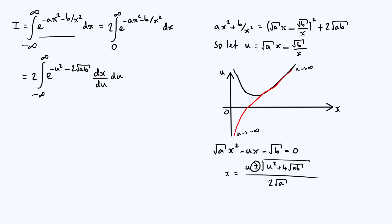Now do I want the plus sign or the minus sign? Well, we are only integrating over positive values of x, and so we can safely put the positive sign there, right? If we had a negative sign, because u squared plus 4 root ab is bigger than u squared, the square root of that whole thing will be bigger than u, and so this would end up negative. So because we're integrating over positive x, we know that we want the plus sign there.